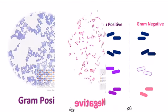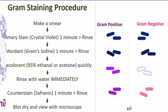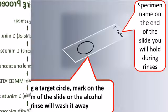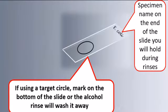For a gram stain, you will want to start with a young culture — about 18 to 24 hours old works best. Older cultures, especially gram-positive bacillus, will sometimes give inaccurate results. If you'd like to draw a target circle on your slides for applying the bacteria, it will need to be done in wax pencil or with a permanent marker on the underside of the slide, because we'll be using an ethanol rinse during this procedure.